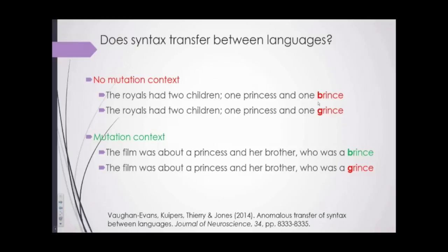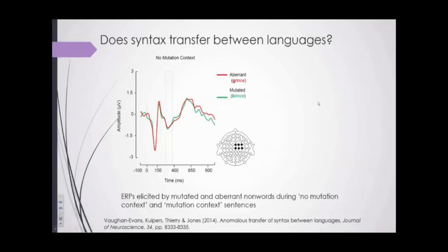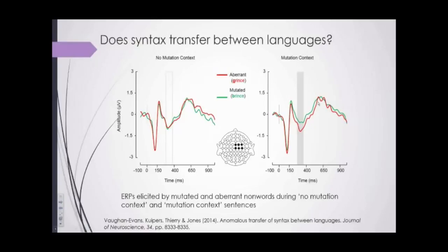We were measuring ERPs and the index we were interested in was the phonological mismatch negativity, or PMN — an ERP index of phonological expectancy. So if a participant was expecting 'brince' and was presented with 'grince,' you would expect a more negative PMN. Our results for the no-mutation context sentences show essentially no difference between the mutated and the aberrant word, suggesting that neither 'grince' nor 'brince' was expected in that context. But in the mutation context sentences, we see a clear significant difference between the two words, with a more negative PMN amplitude for the aberrant word 'grince' than for the mutated word 'brince.'